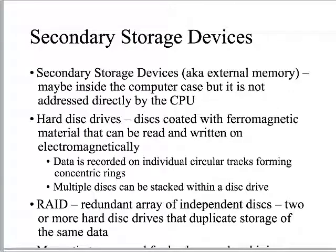Secondary storage devices — also called external memory — can be inside the computer case but are not directly addressed by the CPU; they are outside the motherboard. The hard drive or hard disk is a secondary storage device coated with magnetic material that can be read or written to electromagnetically. This is why you don't want powerful magnets near your computer, particularly near the hard drive. Data is recorded on individual circular tracks forming concentric rings, and multiple disks are often stacked together.